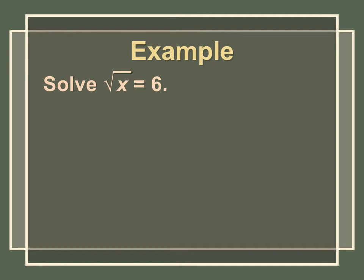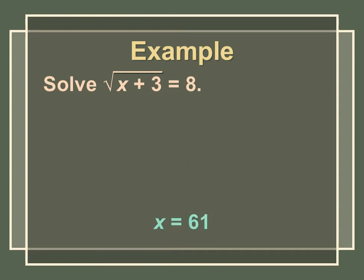Go ahead and try the next one on your own. You should have gotten x = 36, because if you square both sides, that's the only step you have to do. Try the next one: you should have gotten x = 61. First, square both sides to get x + 3 = 64, then subtract 3 from 64 to get 61.